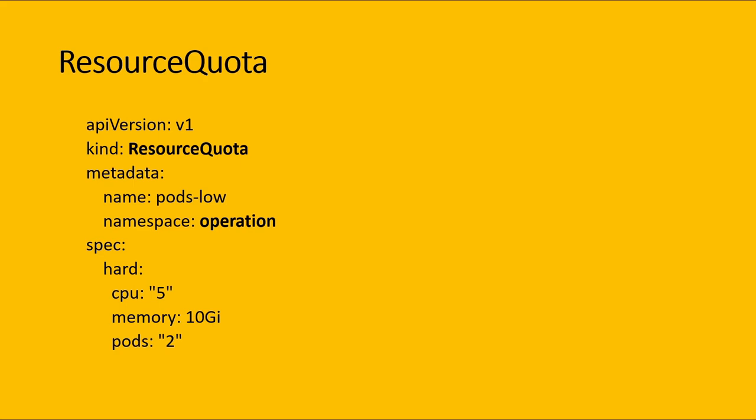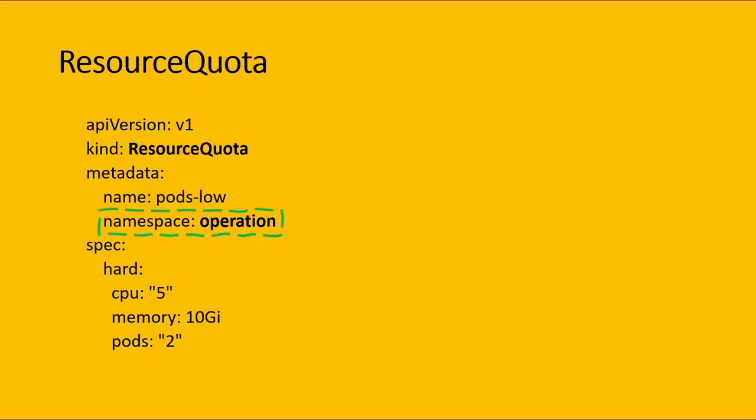To add quota to a namespace, we need to create a ResourceQuota. In the YAML file, the kind is 'ResourceQuota'. Under the metadata field, we mention the name of this resource quota — for example, 'pod-quota'. This resource quota is created under the operation namespace. We can configure a maximum of 2 pods, 5 CPU, and 10 GB memory. This is just a glimpse of ResourceQuota; I will cover this topic in a separate video.